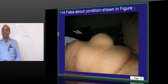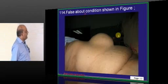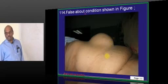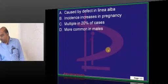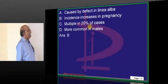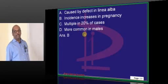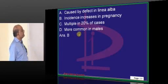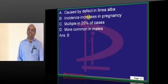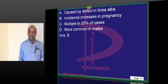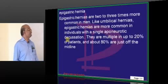The typical mass found here is epigastric hernia, which is caused by a defect in the linea alba. It can be multiple in about 20% of cases, is more common in males, and has no increased predisposition with pregnancy — it is a congenital problem in the linea alba.